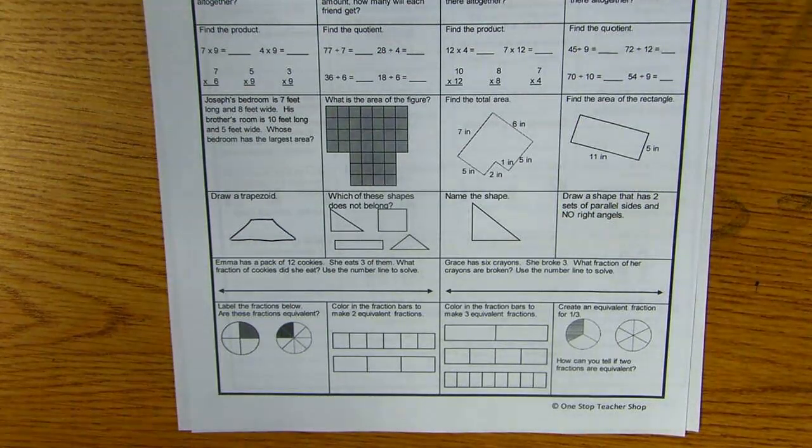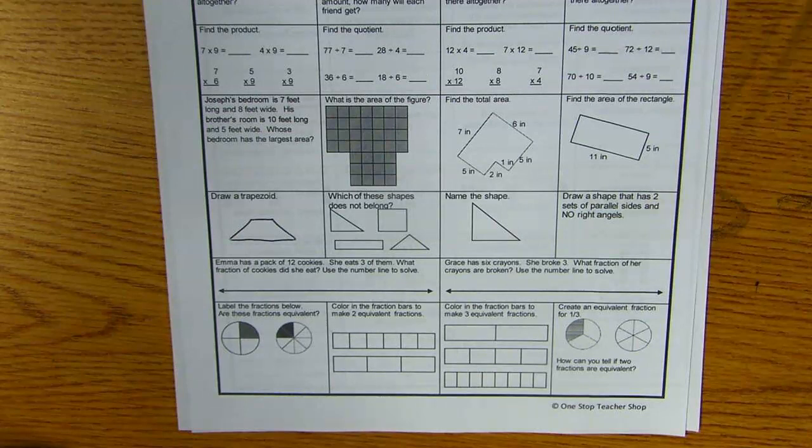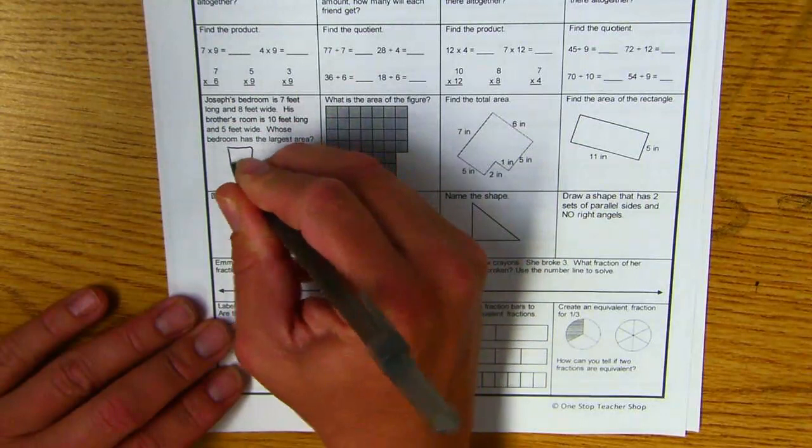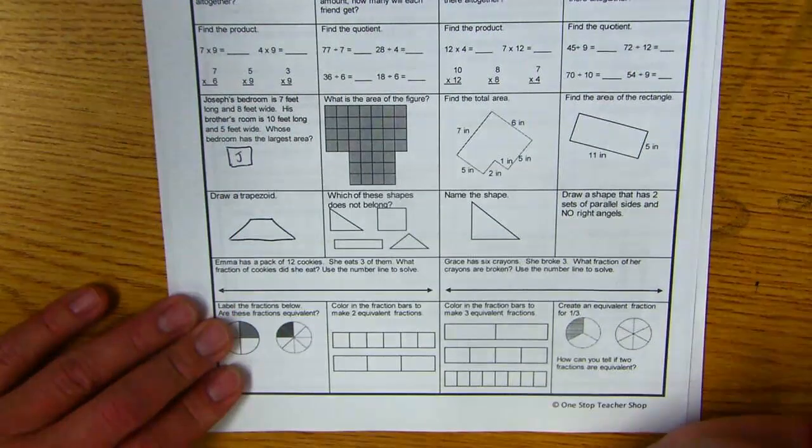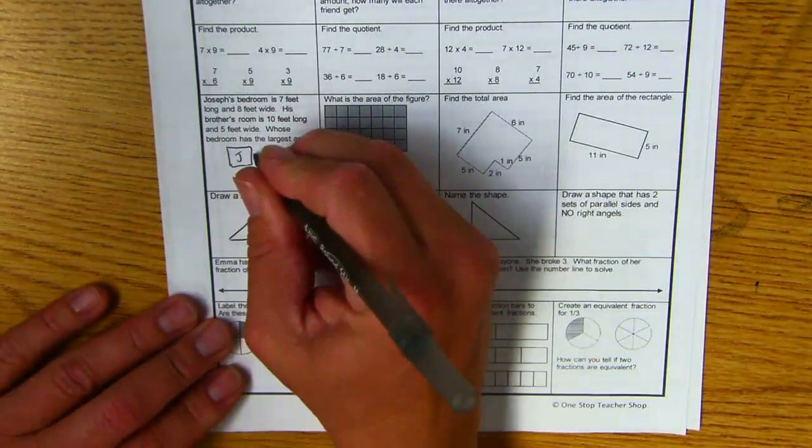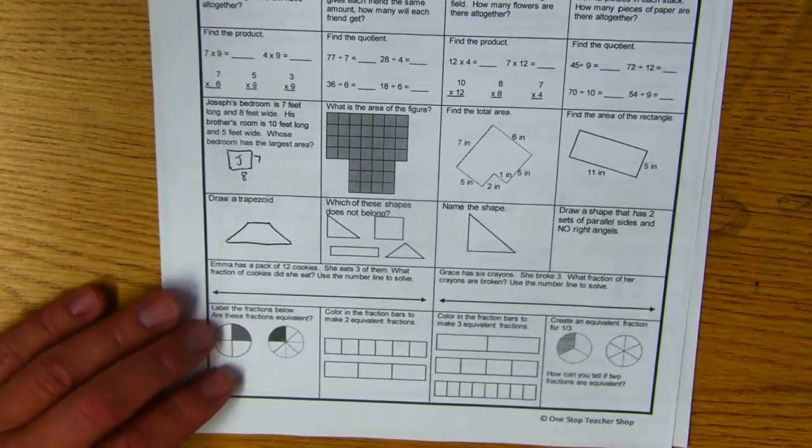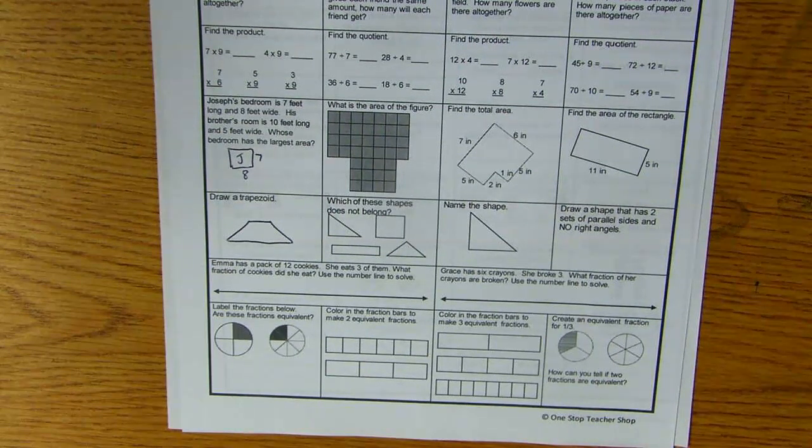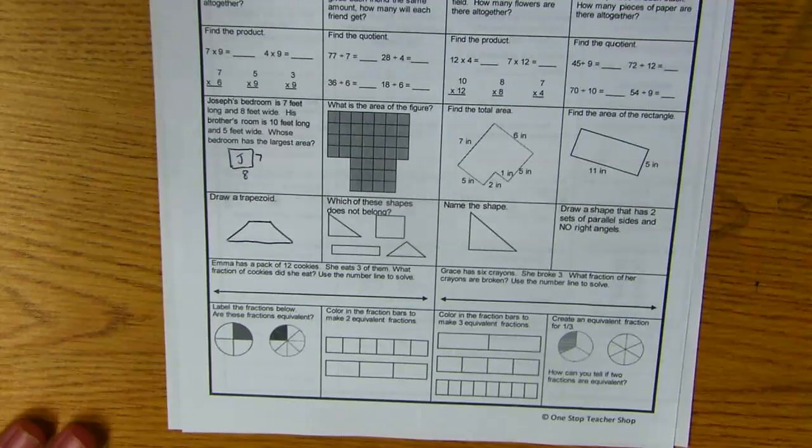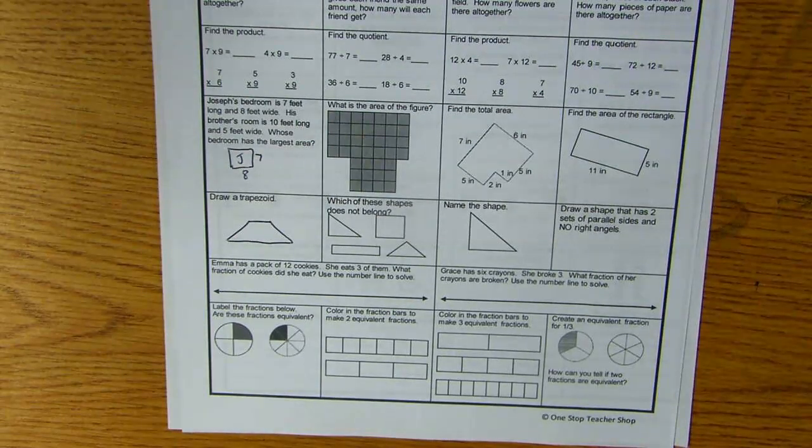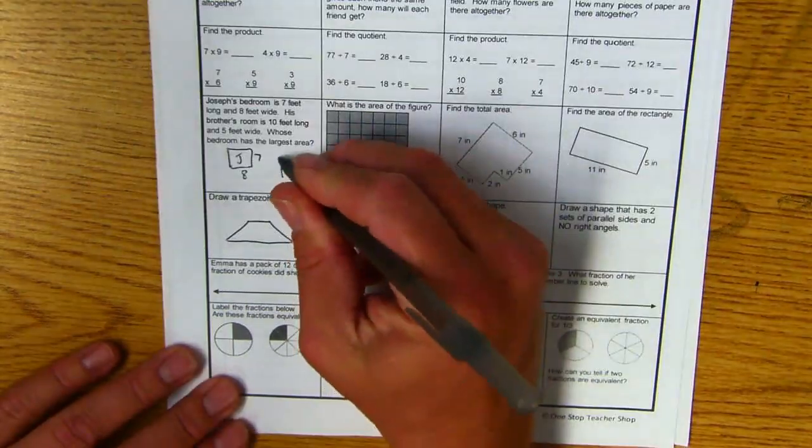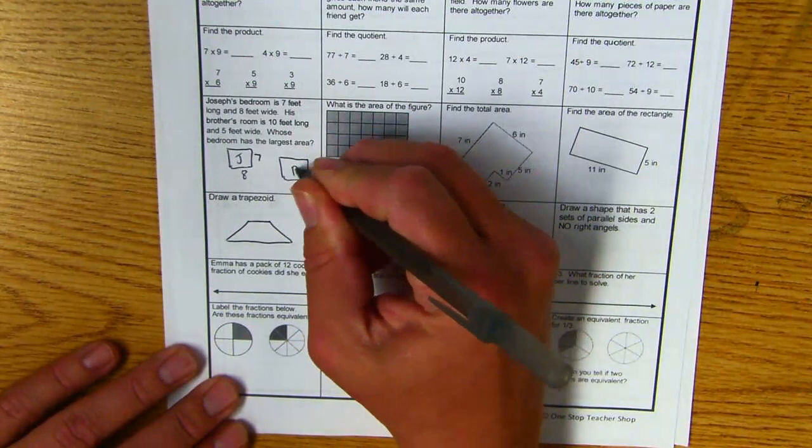Joseph's bedroom is seven feet long and eight feet wide. Draw a picture. Okay, we'll put a J in the middle so we know that's Joseph's, seven by eight. If you're confused, the best thing you can do is just draw a picture, try to draw what's in your head or what you think the question is asking. His brother's room is ten by five. We'll just put a B there for brother.